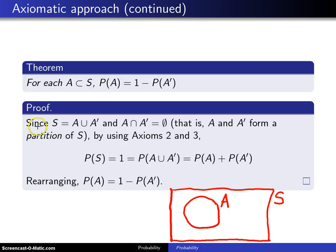So here is the proof. Since S is equal to A union A prime, that's the same as saying, if I go ahead and shade A here, if I take A in union with what's outside of A, I get this complete sample space S.